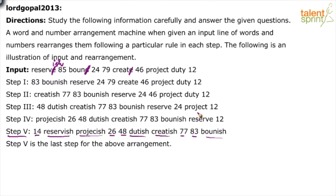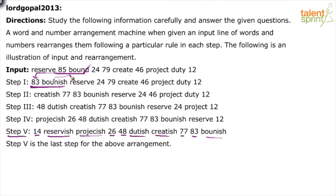Going back to step 1: 85 and bound have been brought to the first two positions, and everything else — reserve, 24, 79, create, 46, project, duty, 12 — has been moved aside. When moved, 85 is reduced by 2 to become 83, and in 'bound' the letter 'd' is removed and 'ish' added to make boundish. So we do minus 2 on the number and add 'ish' to the word.